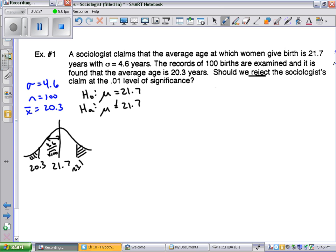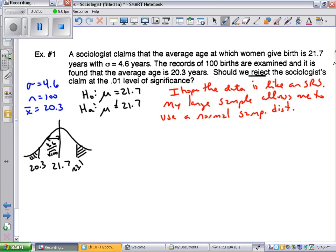Now, I need a few conditions to be met, and these weren't really addressed in the problem, so I hope the data is like an SRS. My large sample allows me to use a normal sampling distribution. And, of course, I know sigma. That's listed over there on the side of 4.6. So now, as I work it out, I want to know what's the probability I would get an x-bar less than 20.3 or an x-bar greater than 23.1.